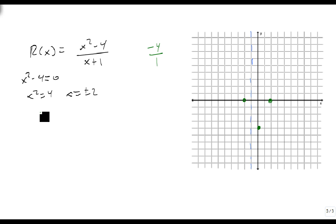All we have left is to find our oblique, so we do our division. Again, we ignore the remainder; we just have x minus 1.